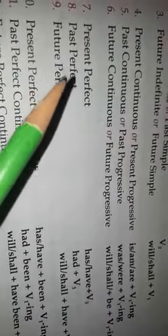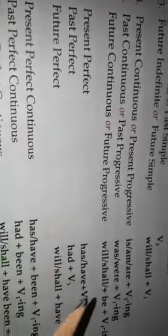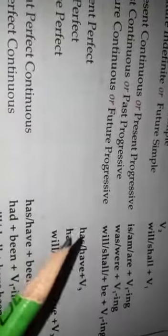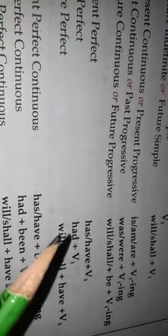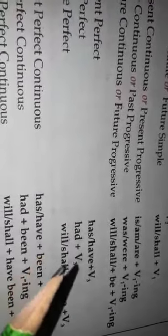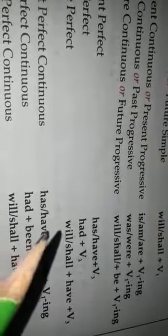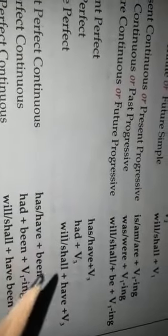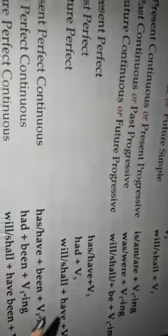Another section covers all perfect tenses with a tense chart. For present perfect: have/has plus verb 3. For past perfect: had plus verb 3. For future perfect: will/shall plus have plus verb 3.